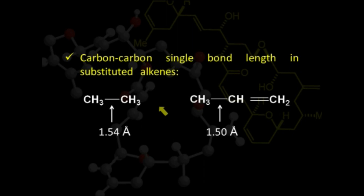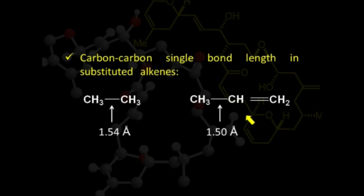In the same way, the carbon-carbon single bond, which should normally be 1.54 Å, is slightly shortened to 1.50 Å in propene. This happens because this bond acquires slightly double bond character due to the resonance structures formed by hyperconjugation.